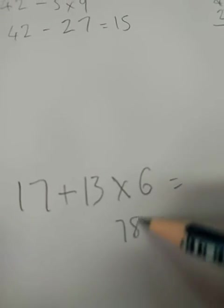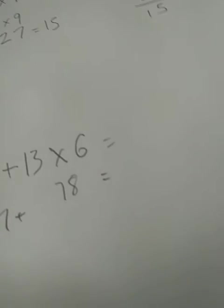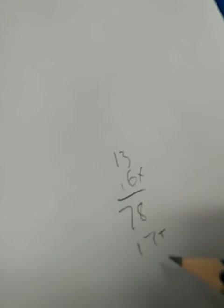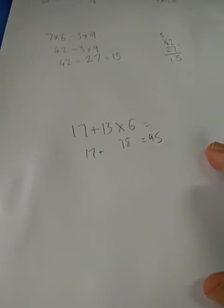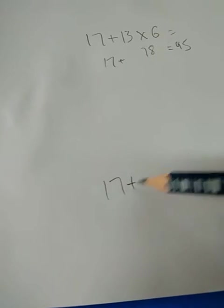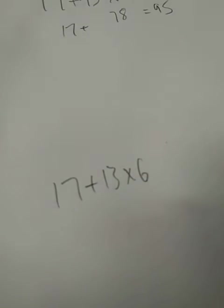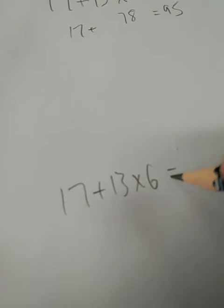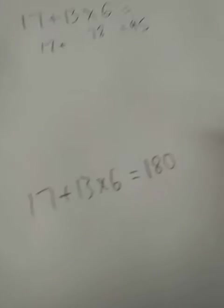So we would do 78 and then 17 plus 78 which gives us plus 17 is 95 right? So that equals 95. That's what it looks like just now. But what if we had 17 plus 13 times 6 and we wanted to make it equal 180? How could we do that?